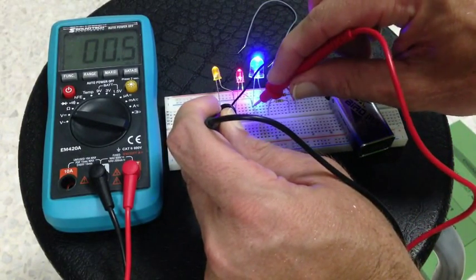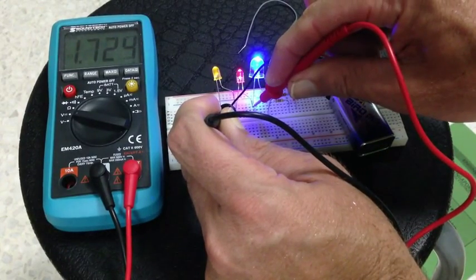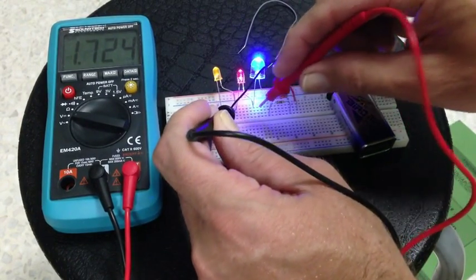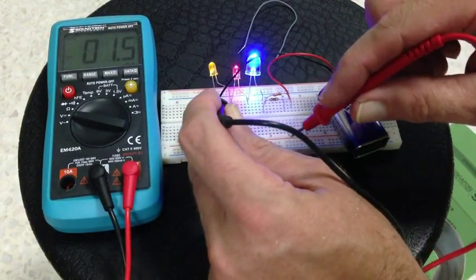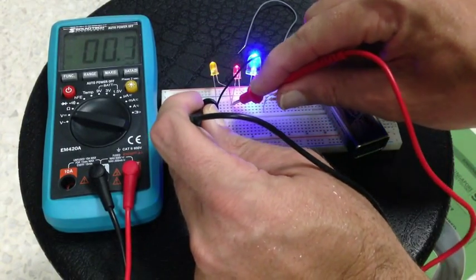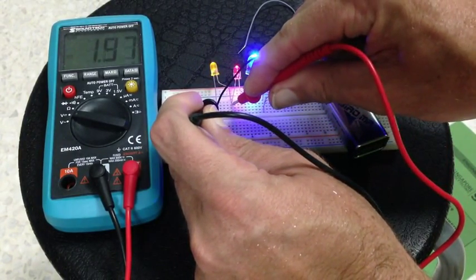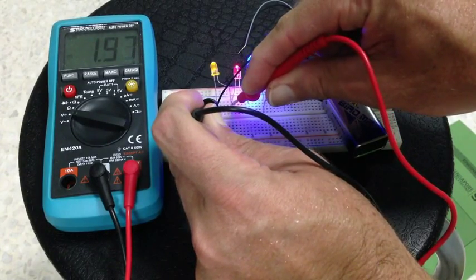The red LED, 1.72 volts. And the yellow LED, just under 2 volts.